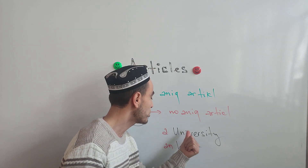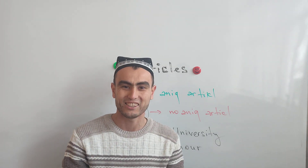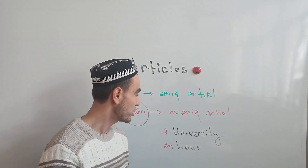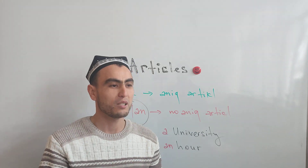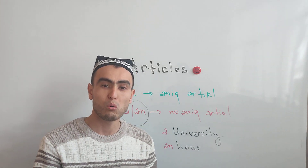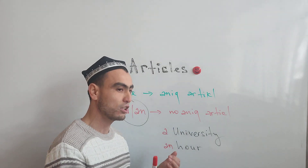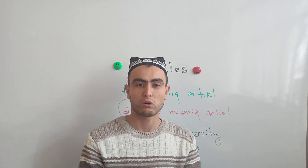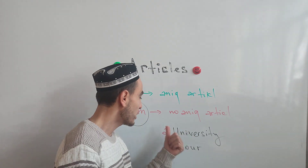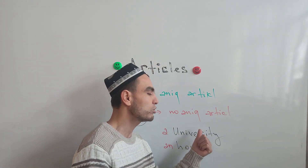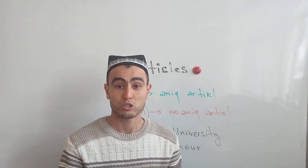University — we use 'a' before it because the word starts with the sound 'yu,' which is a consonant sound. The rule for choosing between 'a' and 'an' depends on the sound, not the letter, at the beginning of the following word.